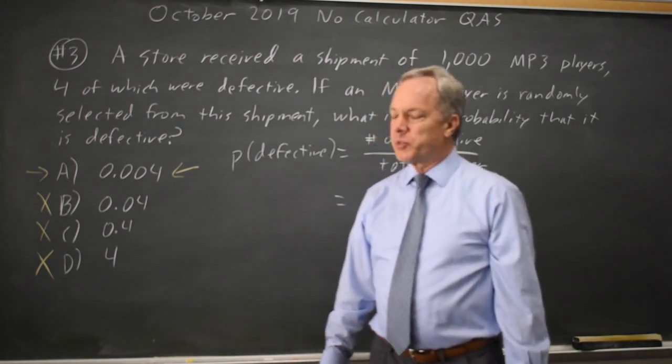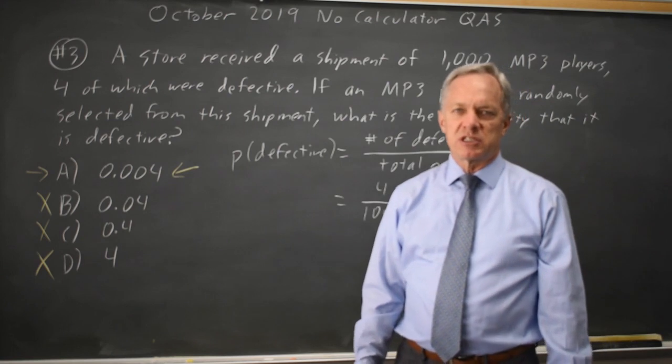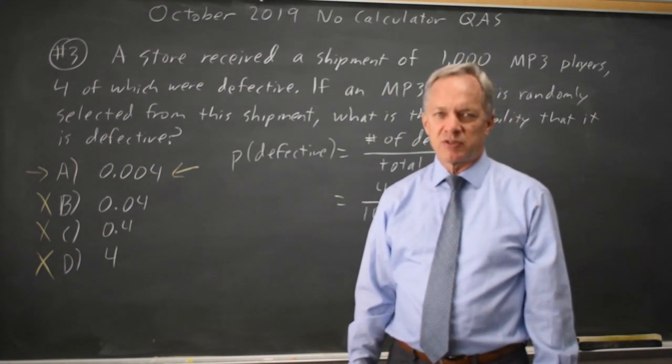College Board is looking for the basic probability with random selection, which is number of successes. In this case, success means choosing a defective over total number of items that you might choose from.